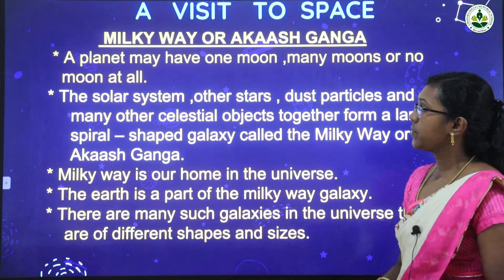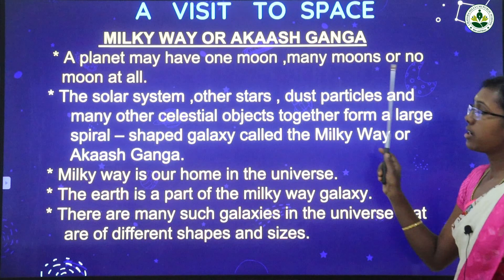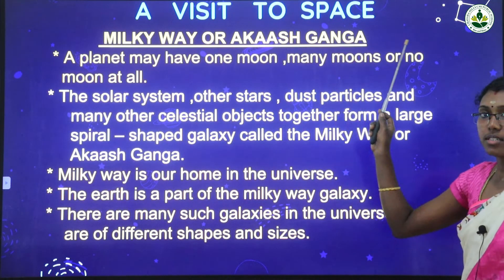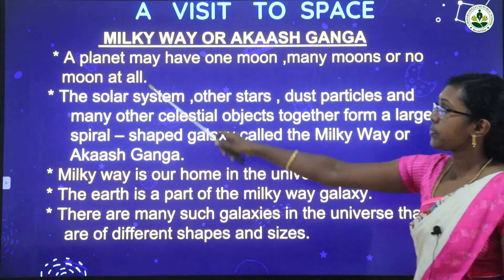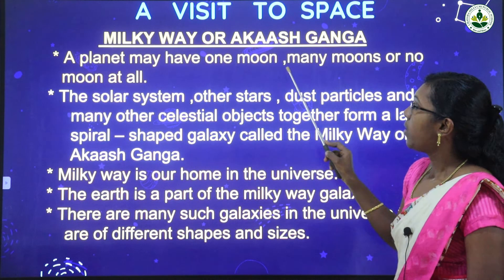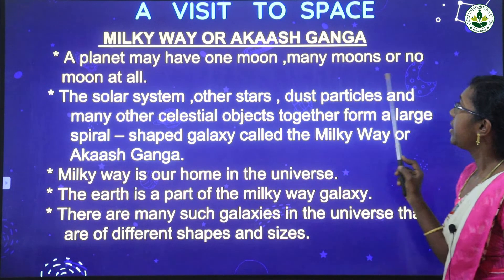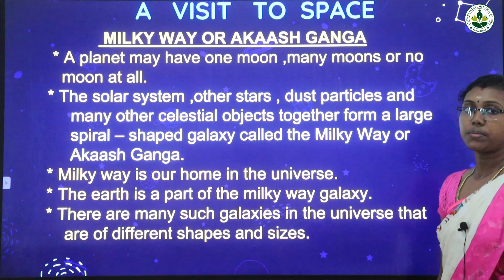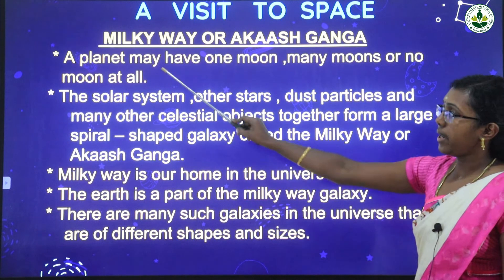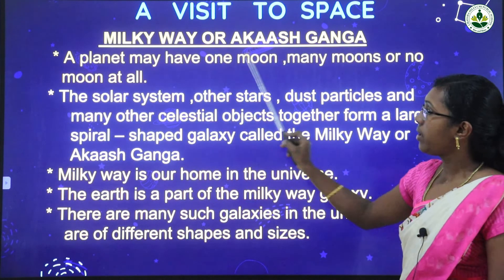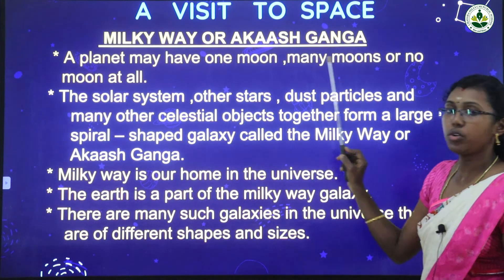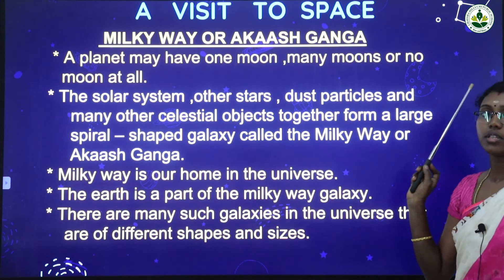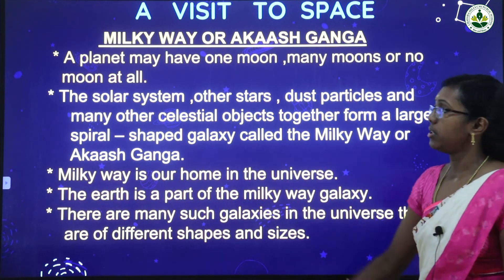Milky Way's other name is Akash Ganga. A planet may have one moon, many moons, or no moon at all. So a planet can have either one moon, many moons, or there won't be any moon at all.